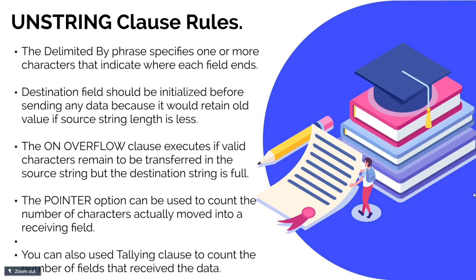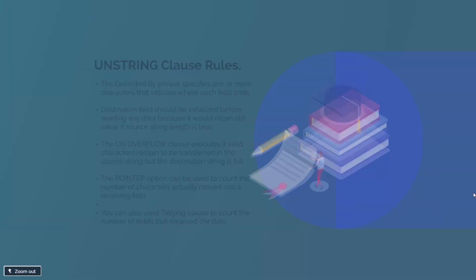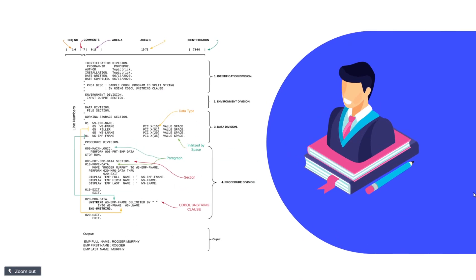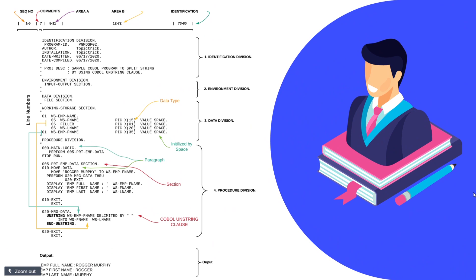Now let's move on to a line-by-line explanation of a COBOL program that performs the unstring function, so you can understand how exactly to write a COBOL program to accomplish this. Let's look at the sample COBOL program which uses the COBOL Unstring Clause to split a string into two separate fields.